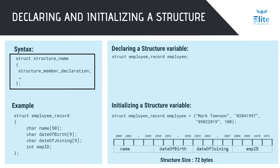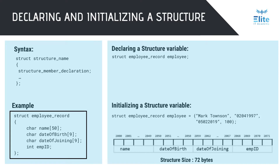To declare a structure, you need the keyword struct followed by a structure name. This structure name is the type name and is followed by a declaration of each structure member within curly braces. Members of a structure can be of any data type, including arrays, structures, and unions. As shown here, we have declared a structure called Struct Employee Record. It has four members: the first three are character arrays containing the name, date of birth, and date of joining; the fourth member is an int containing the employee ID.